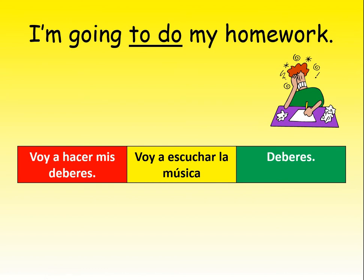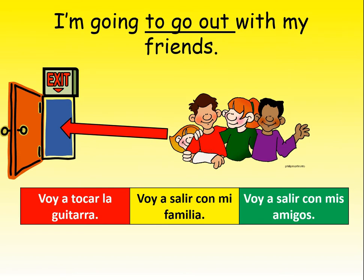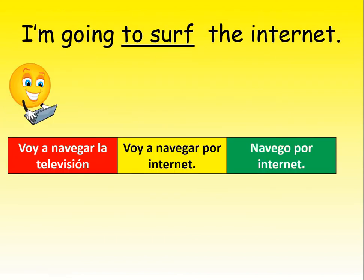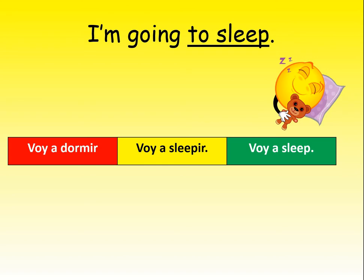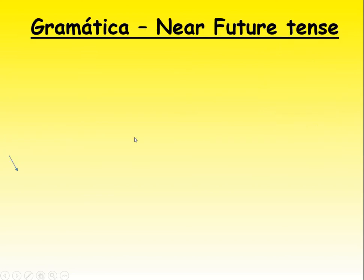'I am going to do my homework' - we should have 'voy a hacer mis deberes' - rojo. 'I am going to go out with my friends' - hopefully you picked green: 'voy a salir con mis amigos' - verde. Another option is I'm going to go out with my family. Remember 'tocar' means to play an instrument. 'I'm going to surf the internet' - amarillo. 'I'm going to sleep' - 'sleepir' is not a verb, so it is rojo: 'voy a dormir'. Hopefully we can recognise that pattern: 'voy a' plus the infinitive.